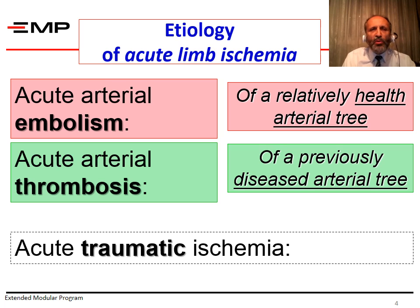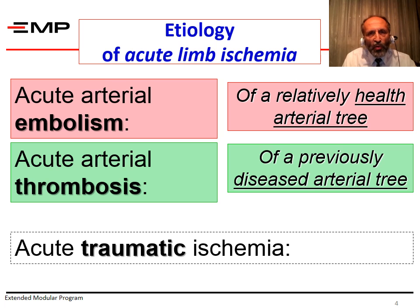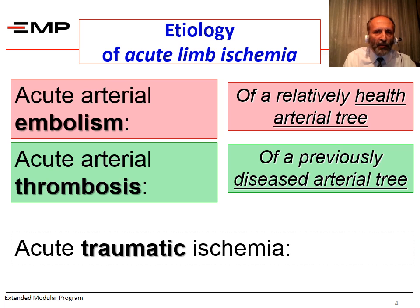Another cause of acute ischemia is arterial trauma, which is beyond the scope of this session. However, trauma can result from a direct stab to the artery, fracture of a long bone related to an artery, or a crush injury involving the limb and its blood vessels. The diagnosis and management of arterial trauma is beyond the scope of this presentation.